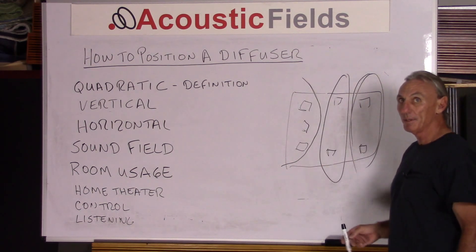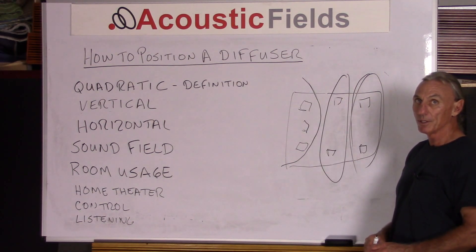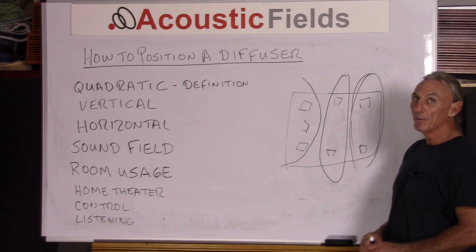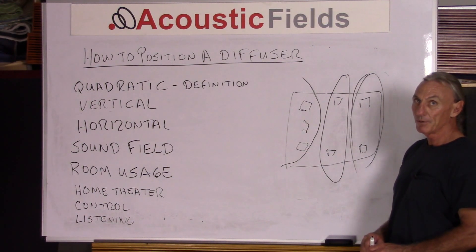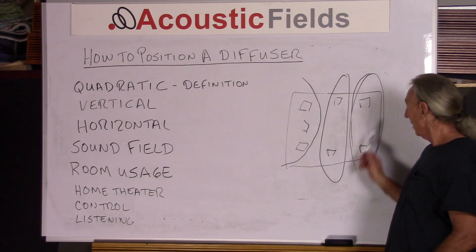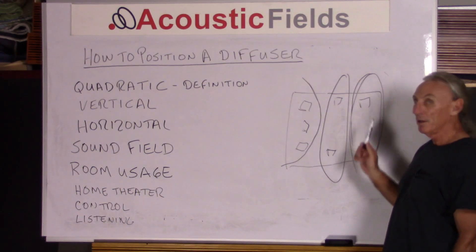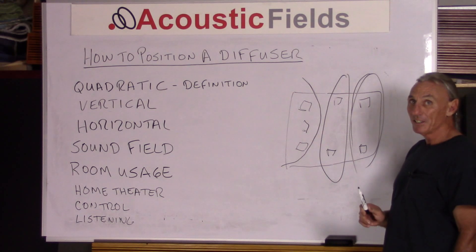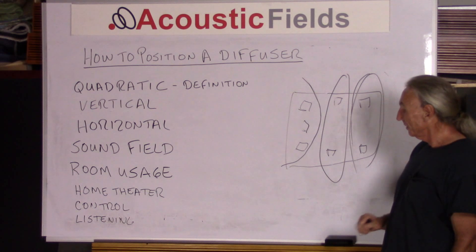It's always a combination of diffusion and absorption in a home theater room that achieves the best results. Diffusion on the rear wall and ceiling are common applications for quadratic diffusion in home theaters.